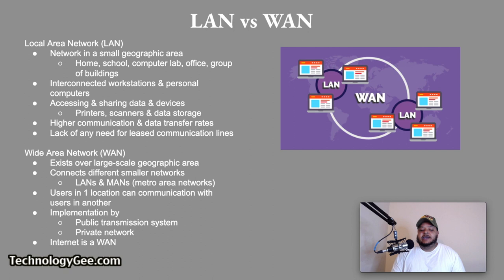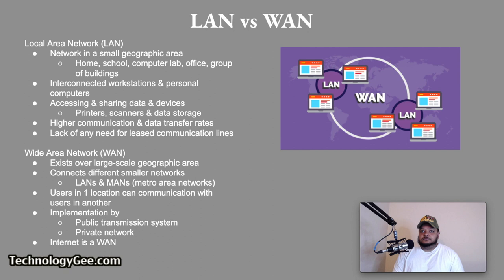A wide area network, also known as a WAN, is a network that exists over a large-scale geographic area. A WAN connects different smaller networks, including LANs and metro area networks (MANs), ensuring that computers and users in one location can communicate with those in other locations. WAN implementation can be done with the help of the public transmission system or a private network. The Internet is an example of a WAN — essentially, a WAN connects multiple LANs across the world together via the Internet.